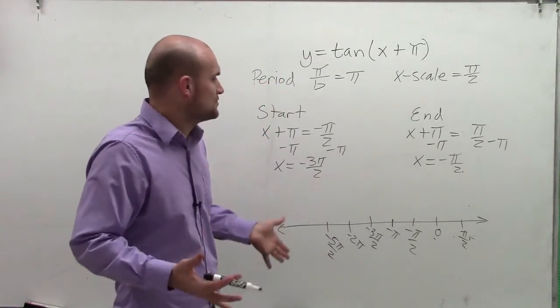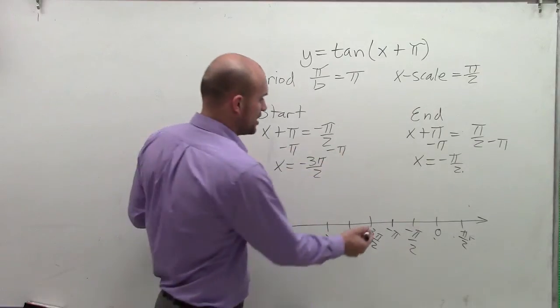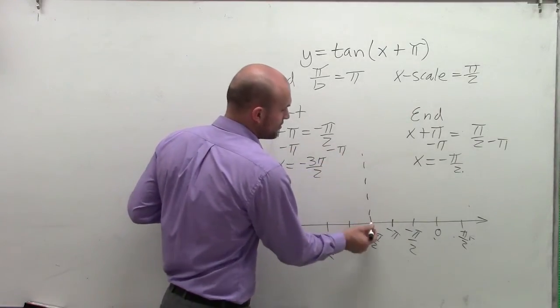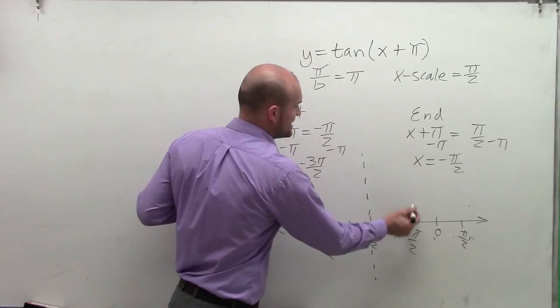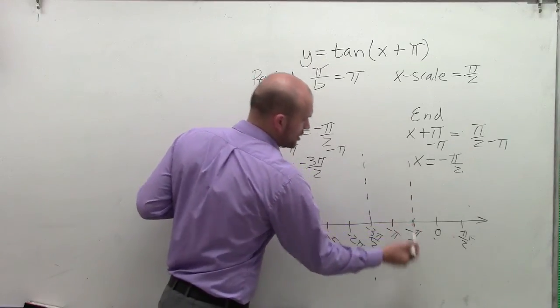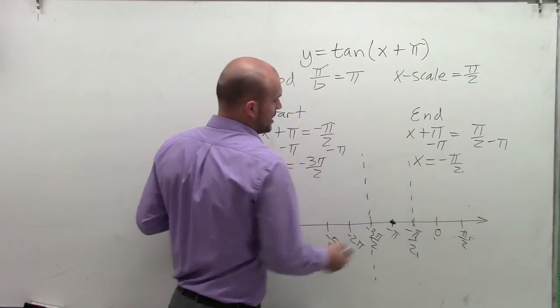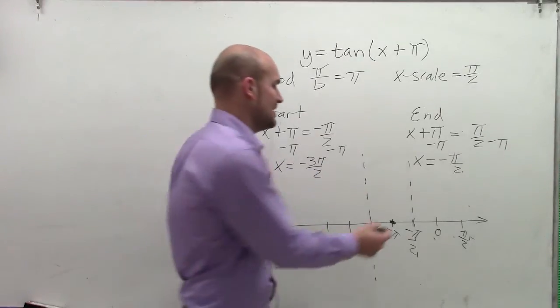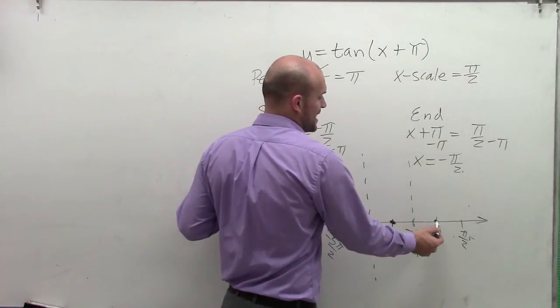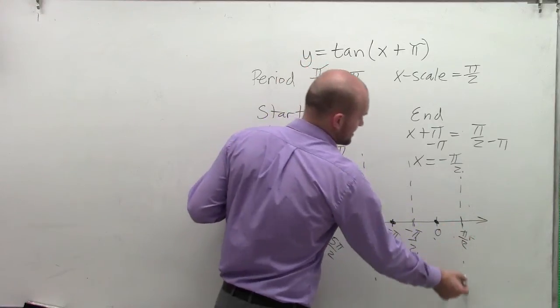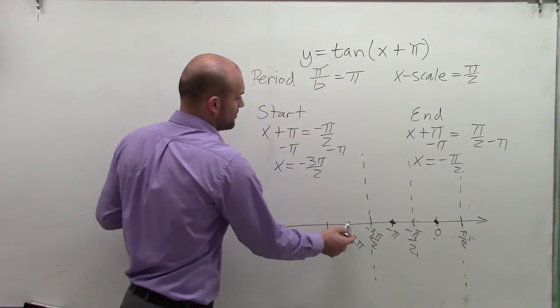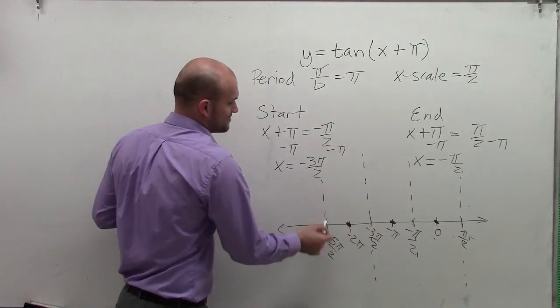So now let's look again at our start and our end. Our starting point is going to be an asymptote of our graph, as well as the ending point. The middle term, our middle critical point, is going to be our x-intercept. Then I can just continue that on: asymptote to x-intercept to the next asymptote, asymptote to x-intercept to asymptote.